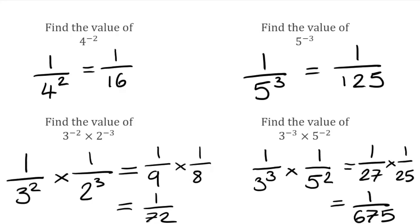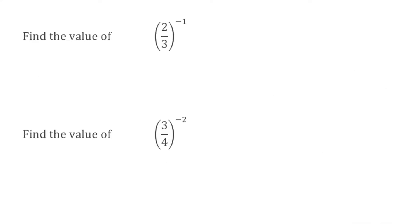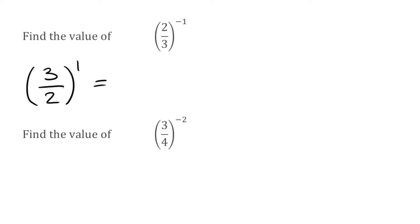Well done if you got those right. Let's look at some more. For this first question, we've got 2 thirds to the power of negative 1, which is basically finding the reciprocal of 2 thirds to the positive 1. When finding the reciprocal of a fraction, all we do is flip it upside down and apply the positive indice. So 2 over 3 to the power of negative 1 becomes 3 over 2 to the power of positive 1, which is just 3 over 2.